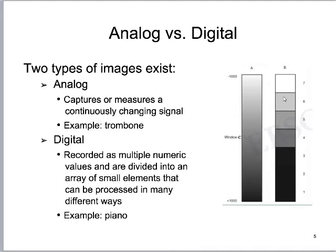Let's start off by talking about analog versus digital. There are two types of images out there. Analog images are anything that captures or measures a continuously changing signal. An example from the musical world would be a trombone, which has a sliding scale. Illustration A here shows that sliding scale of a continuously changing signal.